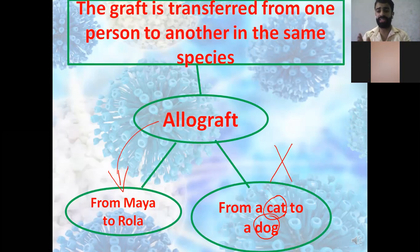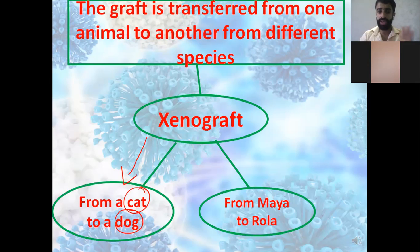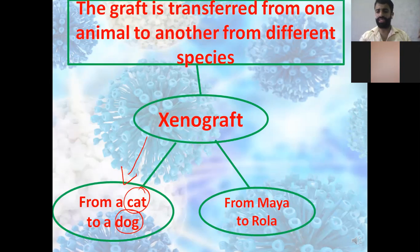Another example: from a cat to a dog. Cat and dog are different species, so this is called a xenograft. Xenograft is when the graft is transferred from one animal to another of a different species — for example, from a cat to a dog, from a horse to a donkey, or from a monkey to a cat.